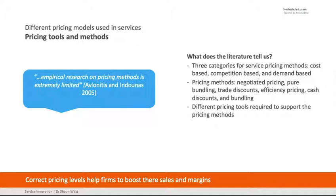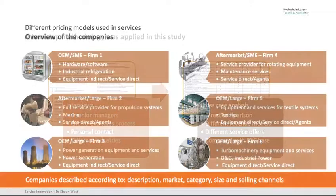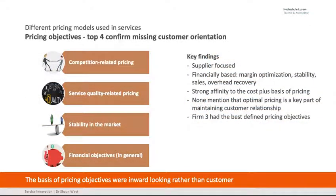There are lots of tools and methods for pricing, and we need to understand how they all fit together. We took interviews and did cross-case analysis — six firms, what did you do, how did you do it — and looked at them in completely different markets. Pricing objectives included competition pricing, service quality-related pricing, stability in the market, and return on sales targets. But often what they missed was the fact that some services demand a higher premium for whatever reason in the market.